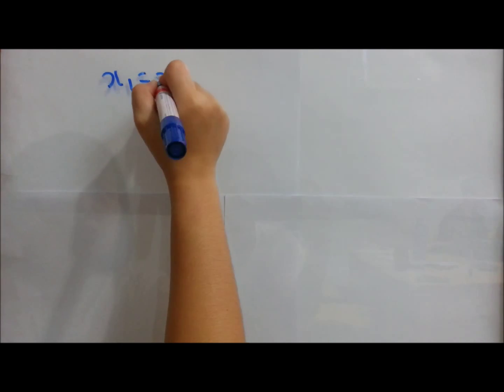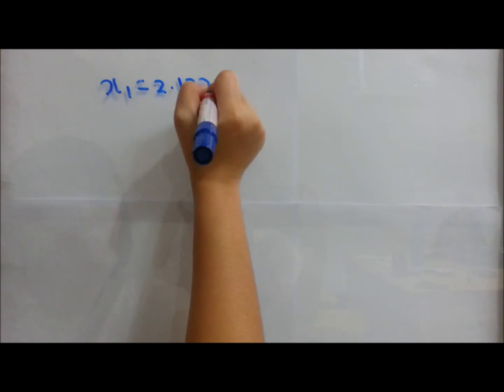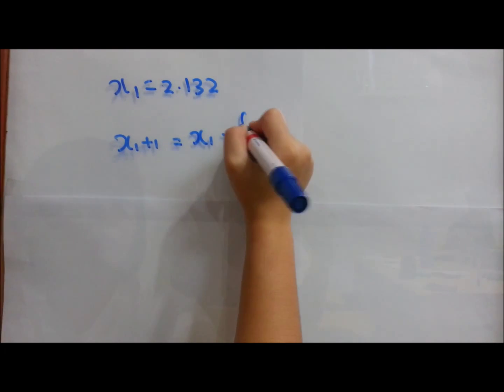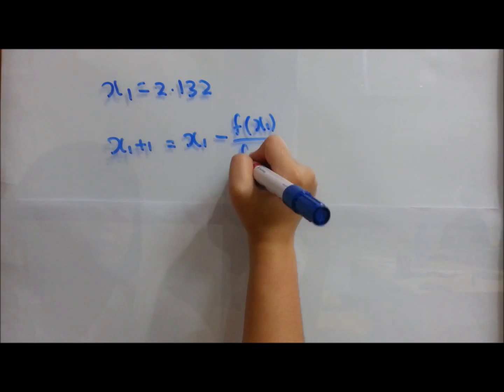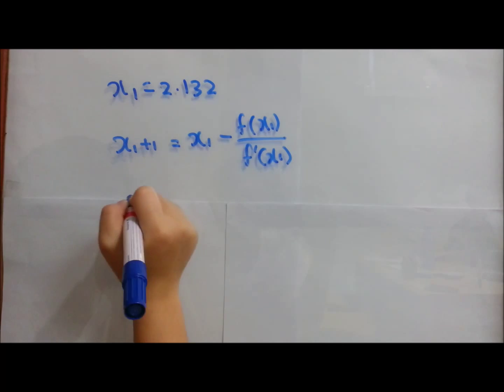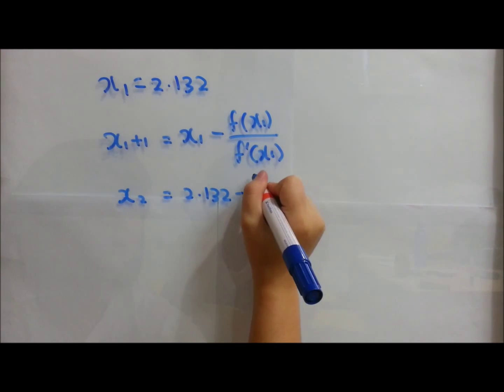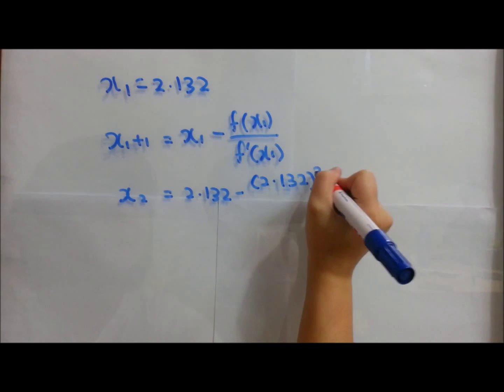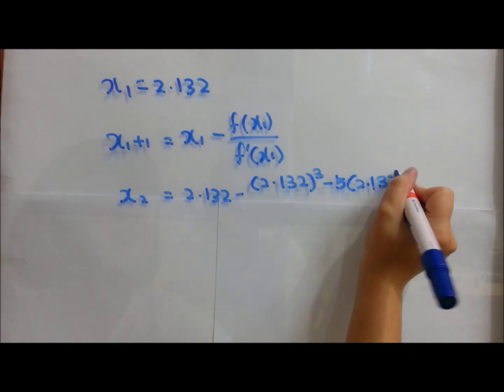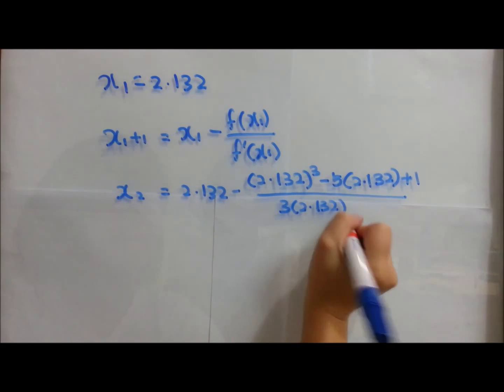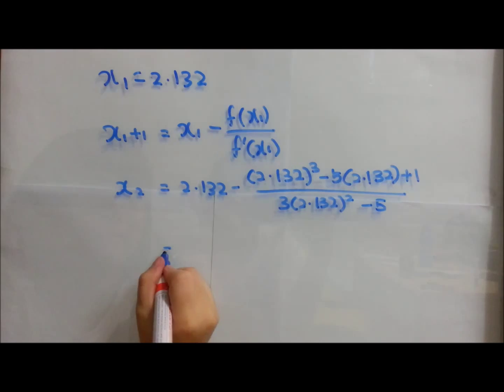Next is to find x₂. x₂ equal to x₁ minus f(x₁) over f'(x₁). So you will get 2.132 minus 2.132 cubed minus 5 bracket 2.132 plus 1 over 3 bracket 2.132 squared minus 5, which you will get x₂ equal to 2.128.